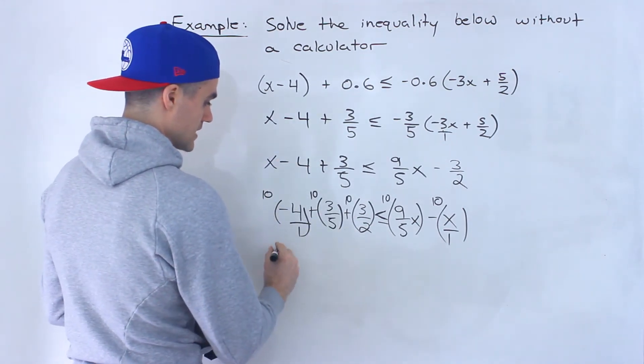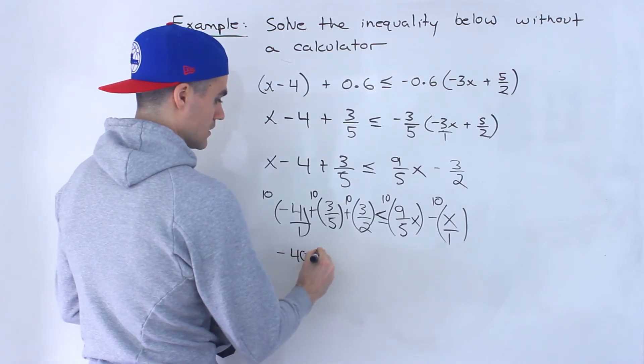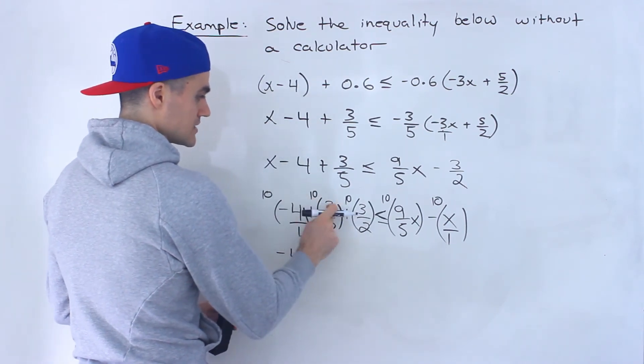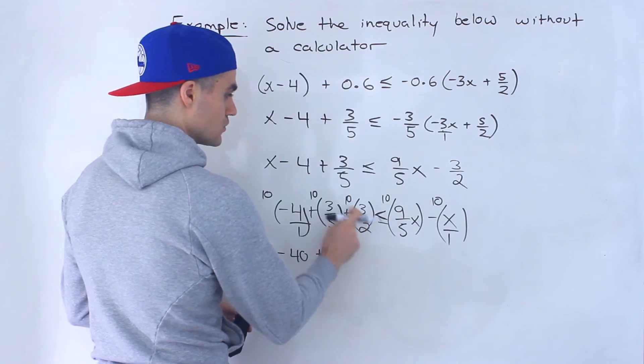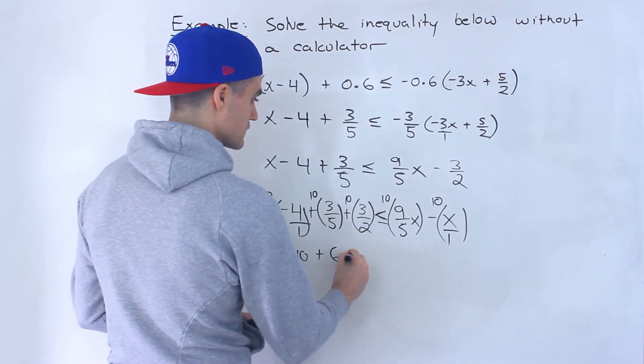So negative 4 times 10 is negative 40. 5 goes into 10 twice, times 3 gives us 6. 2 goes into 10, 5 times times 3 gives us 15.